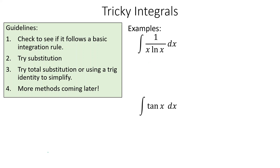Some more tricky things with integration rules. First, check if it follows a basic integration rule. We don't have a great integration rule for 1 over (x times ln x) dx. Next, try some sort of substitution. If that doesn't work, try total substitution or use a trig identity to simplify. And if that doesn't work, there are more methods coming later.